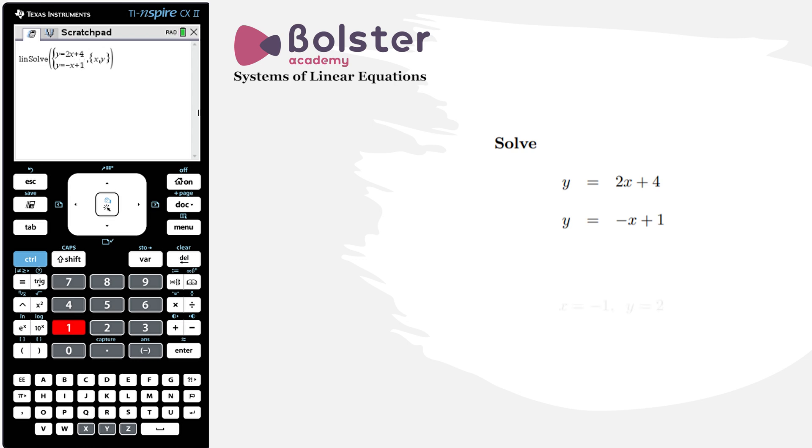I hit enter and I get my solution. The point of intersection is at minus one, two, or the solution to these simultaneous equations is x equals minus one and y equals two.